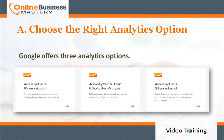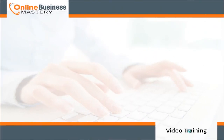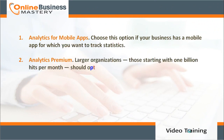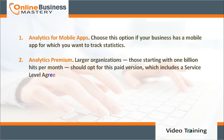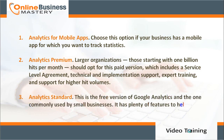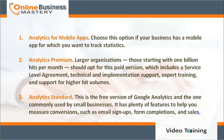Number one: Analytics for Mobile Apps — choose this option if your business has a mobile app for which you want to track statistics. Number two: Analytics Premium — larger organizations, those starting with 1 billion hits per month, should opt for this paid version, which includes a service level agreement, technical and implementation support, expert training, and support for higher hit volumes.